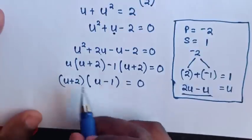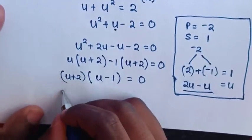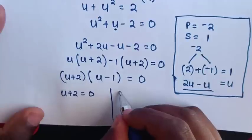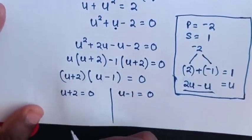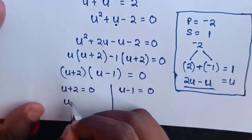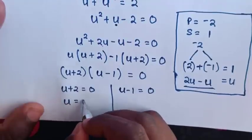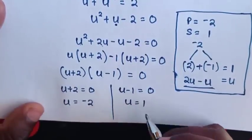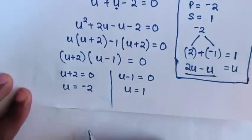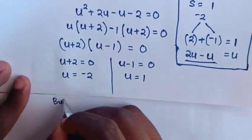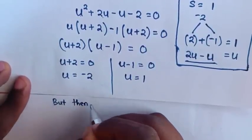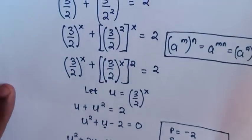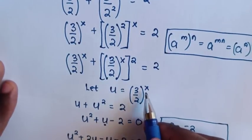From here we have two cases. Case one: u plus 2 is equal to 0, so u is equal to negative 2. Case two: u minus 1 is equal to 0, so u is equal to 1. In the next step, we substitute the value of u back. We let u equal to 3 over 2 bracket power of x.